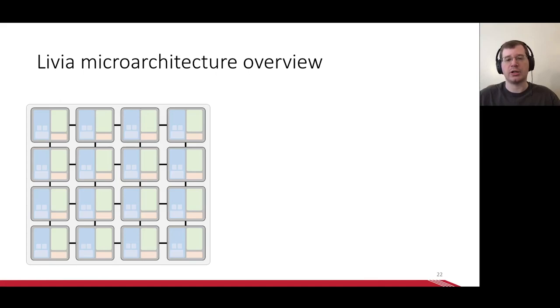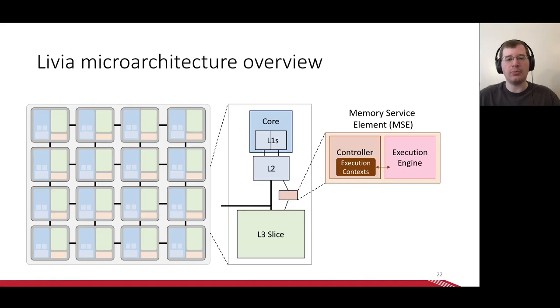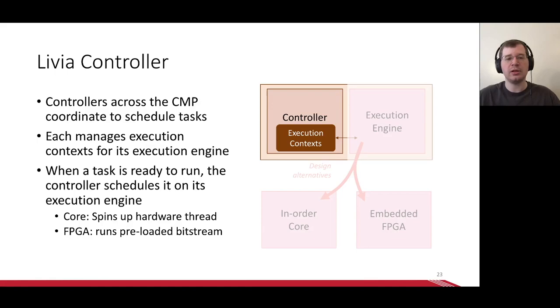Switching to the microarchitecture, we start with a traditional tile CMP where each tile has a core, a private L1 and L2, and a slice of the shared LLC. To this, we add a memory services element, which consists of a Livia controller and an execution engine, where the engine can be an in-order core or an embedded FPGA. Let's start by looking at the Livia controller. The controllers coordinate across the CMP to schedule tasks. When a controller determines it should run a task, it starts execution on its engine. Let's go through a few examples of the scheduling process to understand how it works.